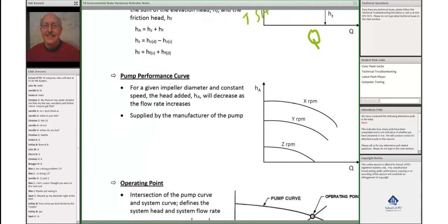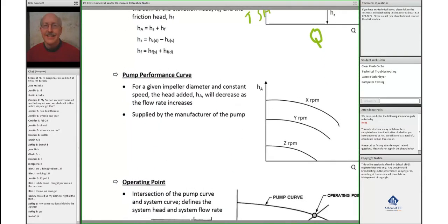The head loss due to friction on the suction side and the discharge side. So that was the system curve. Another curve is what's called the pump performance or characteristic curve.